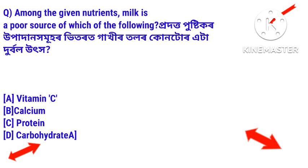Question 1: Among the given nutrients, milk is a poor source of which of the following? Answer: Vitamin C.